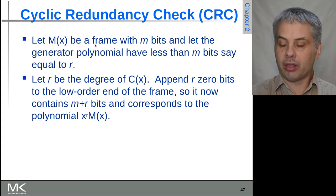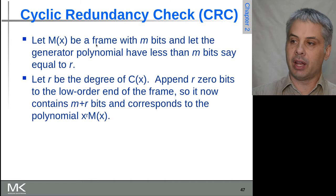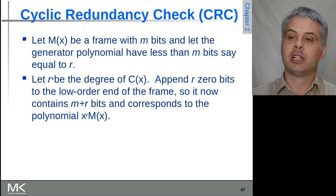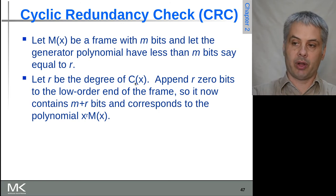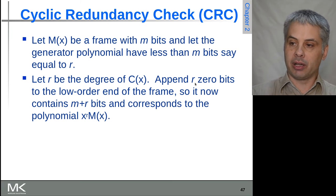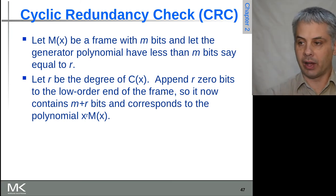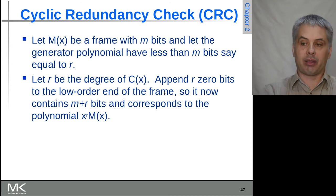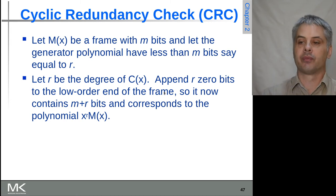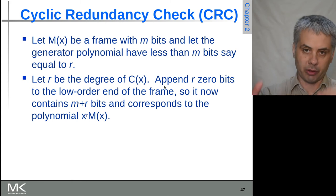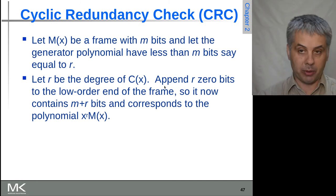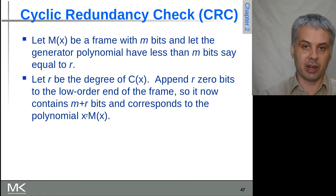If m(x) is the frame with m bits, and the generator polynomial has degree r which is less than m, then we append r zero bits to the low-order end of the frame, giving us m plus r bits. This corresponds to the polynomial x^r multiplied by m(x), because we have shifted the data frame left by r bits, which is equivalent to multiplying m(x) by 2 to the power of r.